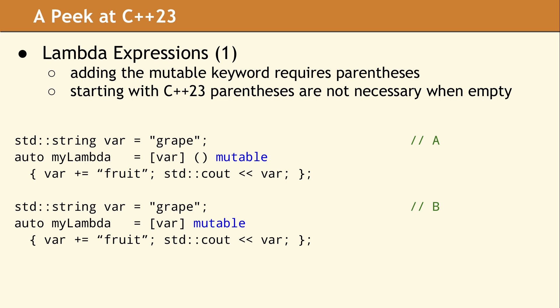Allowing example B to compile might feel like a minor change. However, the ability to leave out the empty parentheses could improve readability when the lambda expression has multiple parts, like a requires clause and a trailing return type. Mutable is not the only keyword which will cause a syntax error if you leave off the empty parentheses. Some of the other keywords and constructs which will result in the same problem are constexpr, consteval, or a requires clause.